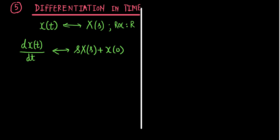The term x(0) is the initial condition — the initial value of the original signal at t = 0. The region of convergence is going to be at least R, meaning it could be greater than the ROC of the original signal.